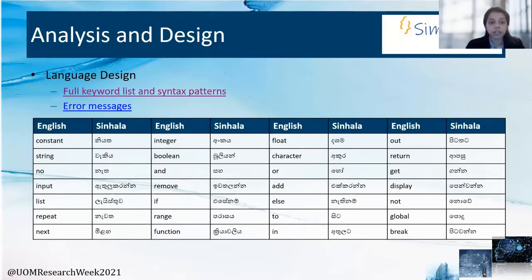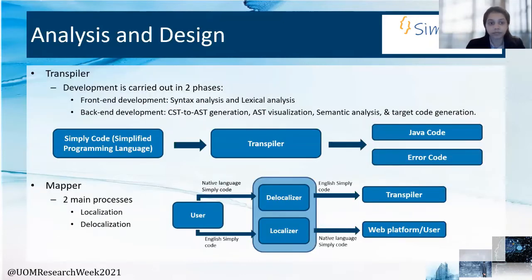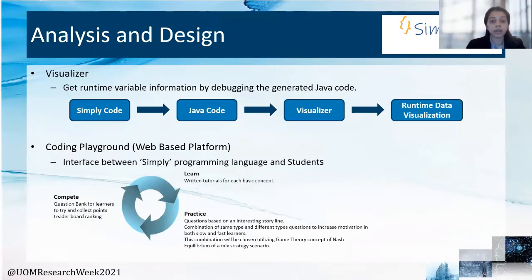Here we have a list of all the initial Simply keywords. There are a total of 28 finalized keywords and we will be seeing more of these syntax patterns as well as error messages during the demonstration. The transpiler was also developed in two phases, with syntax and lexical analysis covering precedence followed by semantic analysis and target code generation. The language method follows two procedures: localization and delocalization, which I mentioned briefly earlier. The visualizer works with the transpiled Java code to obtain runtime debugging information, which is then sent into the visualizer to provide a visual representation.